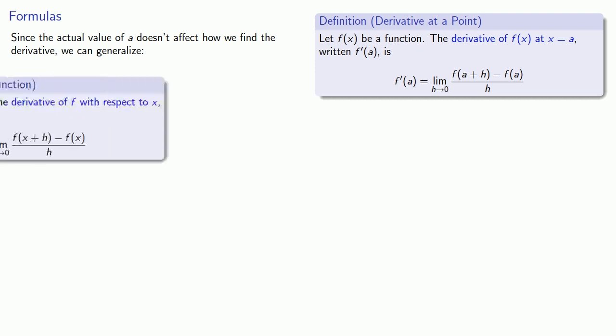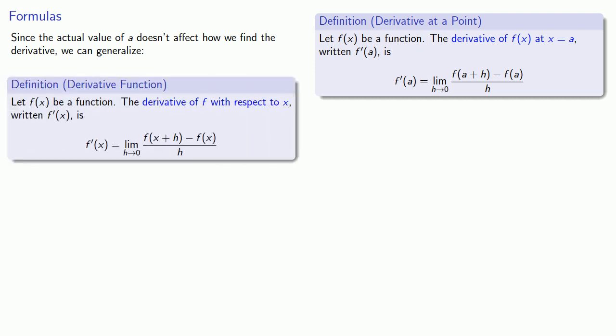So let f(x) be a function. The derivative of f with respect to x, written f'(x), is the limit as h goes to zero of the difference quotient, where instead of letting x equal a, we're just going to leave x as x.